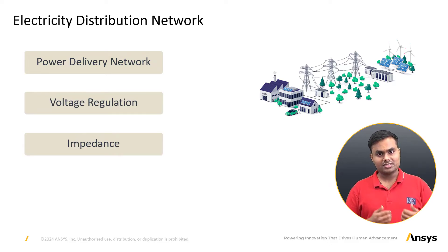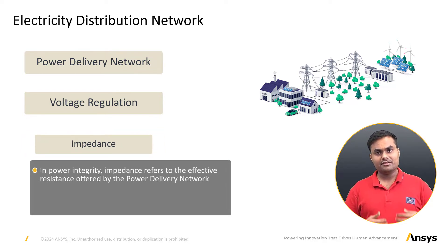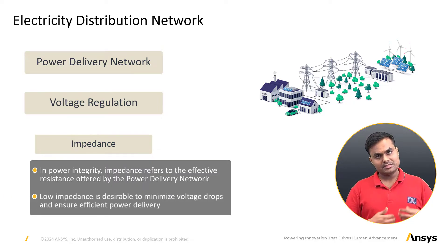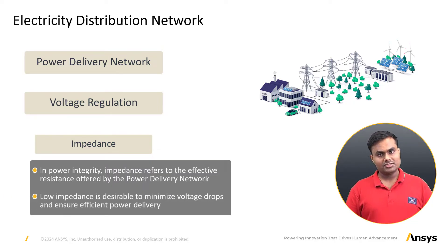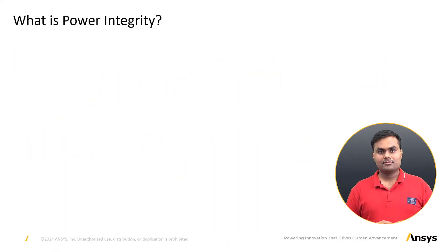Voltage regulation is critical for achieving the desired balance between power consumption and performance. Impedance refers to the opposition to the flow of electrical charge. In power integrity, impedance refers to the effective resistance offered by the power delivery network. Low impedance is desired to minimize voltage drops and ensure efficient power delivery.